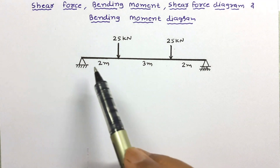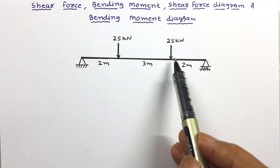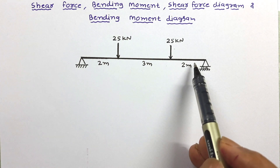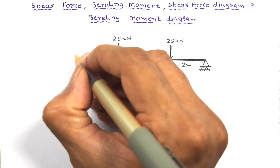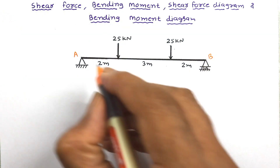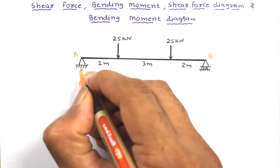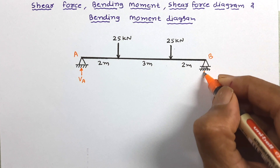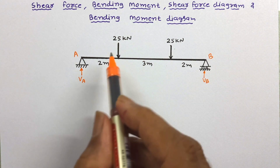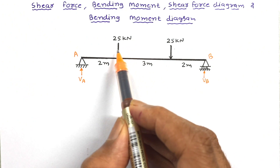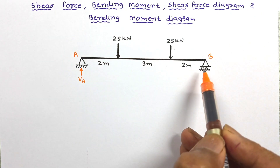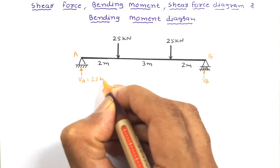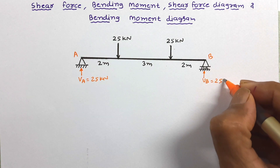Consider this beam. Here in this beam, two point loads are there — 25 kN each — and we can see the beam is symmetric. In this case, if this is support A and this is support B, let us say the vertical reactions are VA and VB. As the beam is symmetric, the loading is symmetric, so the reaction on both supports will be equal — 25 kN each.